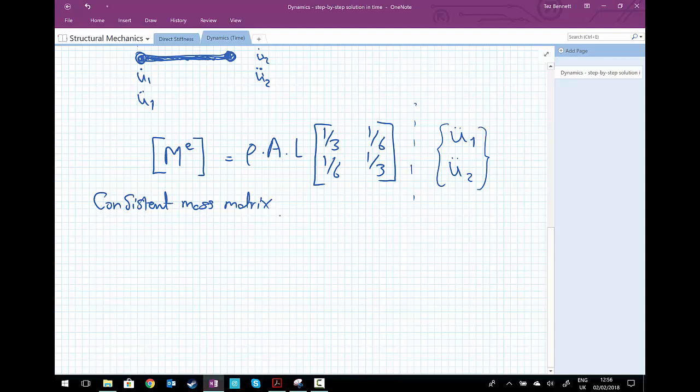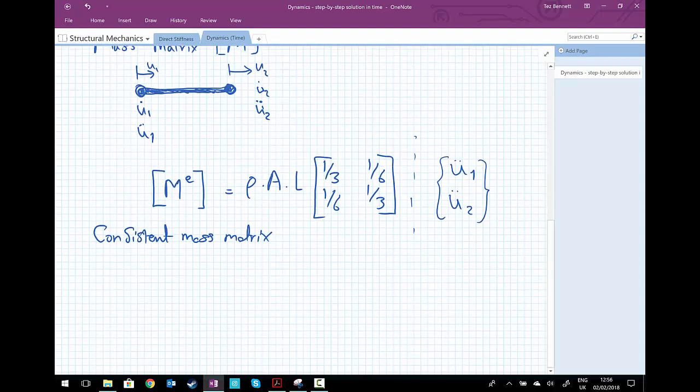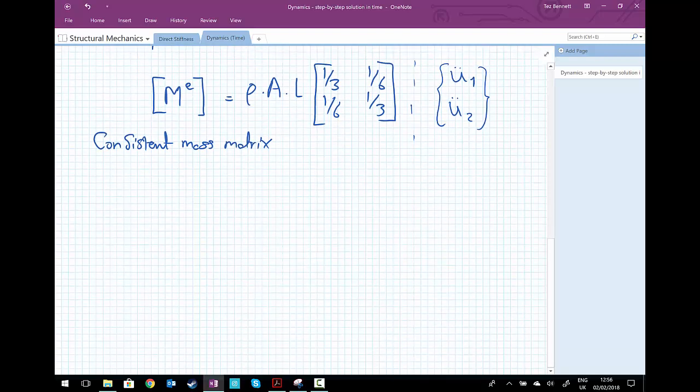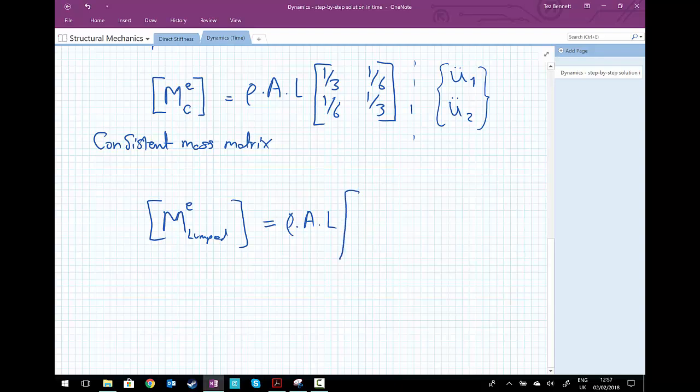But knowing that we essentially want half of the mass at one node and half of the mass at the other end of the bar at node 2, this can lead us to something that we're going to call the lumped mass matrix. We write it still with the same ρ times A times L and still acting on acceleration 1 and acceleration 2. But half of the mass is at node 1, none of the mass considered at node 2. For node 2, we do exactly the same, but half of the mass is directly just lumped, hence the name, at the nodes themselves.